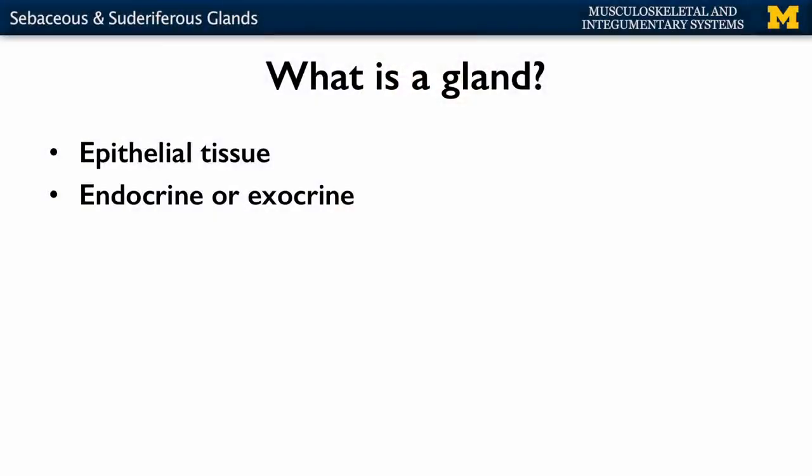Let's talk about glands that are specific to the integumentary system, or to the skin. We will go into way more detail considering glands in the endocrine portion of the MOOC, but I want to introduce some that are specific to this area with just a quick overview. Glands are going to be a collection of epithelial cells or epithelial tissue that secrete something.